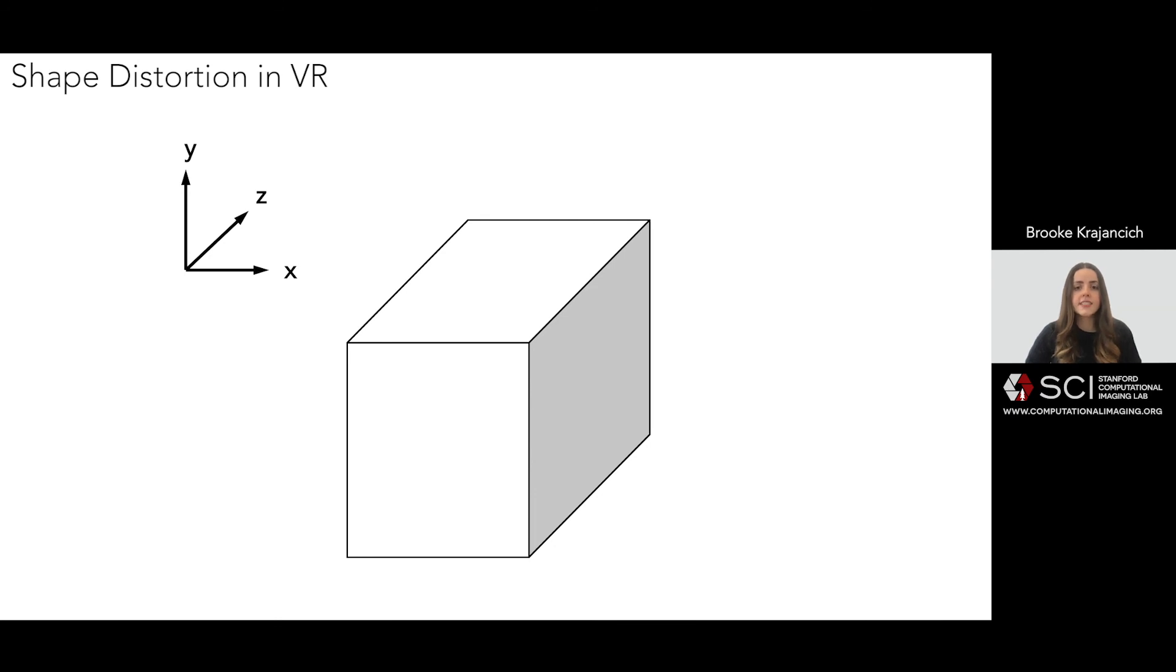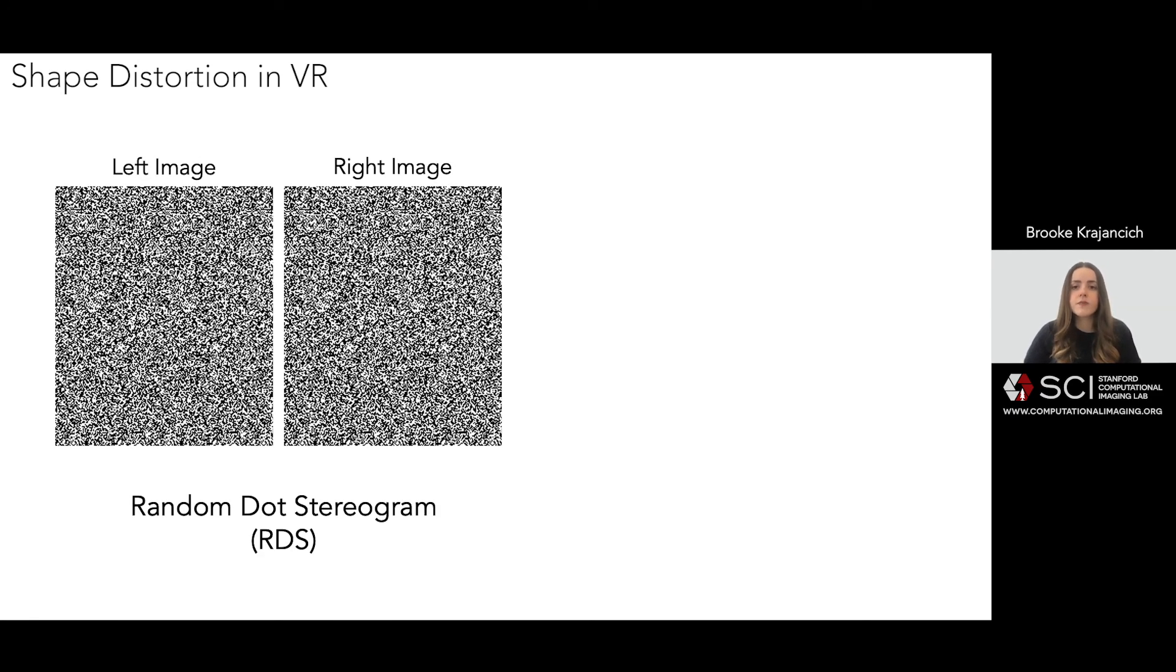Since VR lacks an absolute reference that we could use to show the metric structure of the target shape we are trying to render, we looked for one that could be identifiable only by the ratio of its dimensions, like this cube.